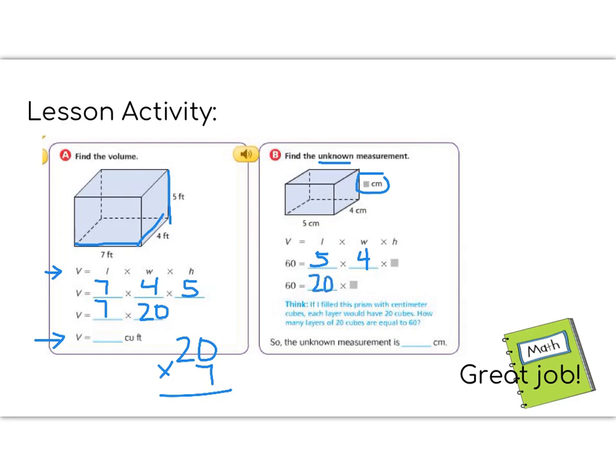So now we need to answer this question. 60 is the total equals 20 times what? So let's reverse this and think about the multiplication. 20 times blank gives me 60. That hole will help us tell what the unknown measurement is. Fill in this blank and be prepared to show your teacher at the teacher table. Great job, 5th graders!